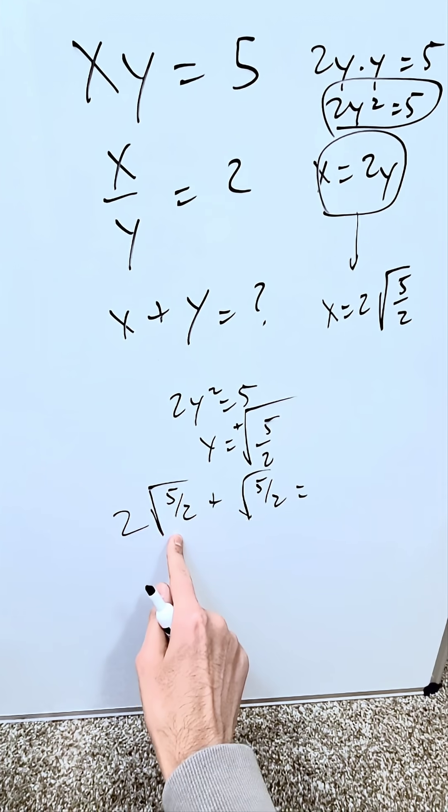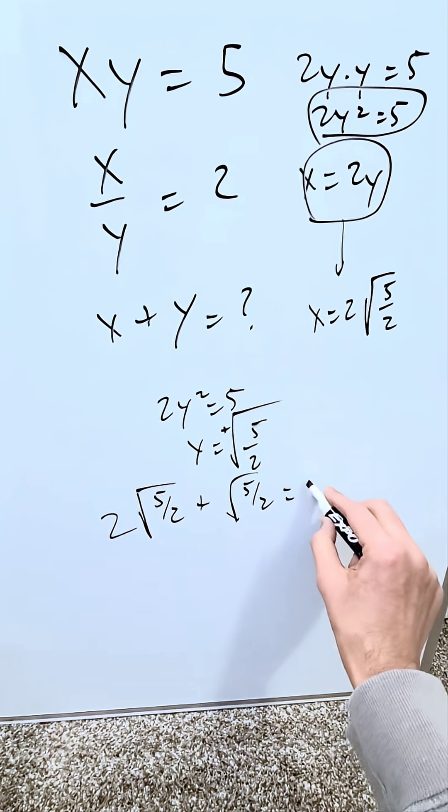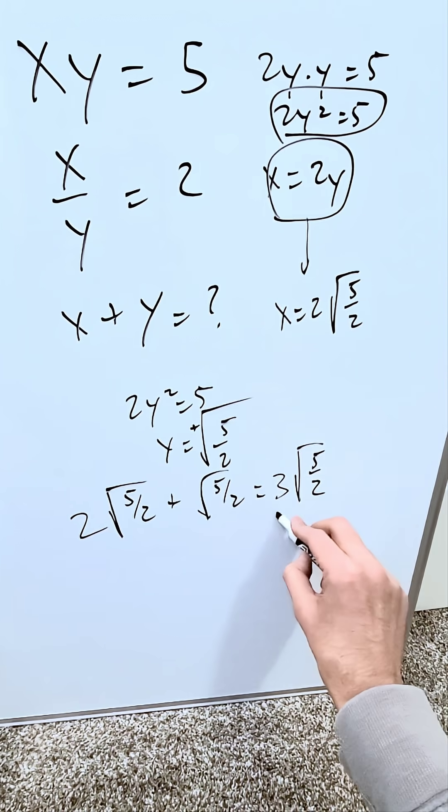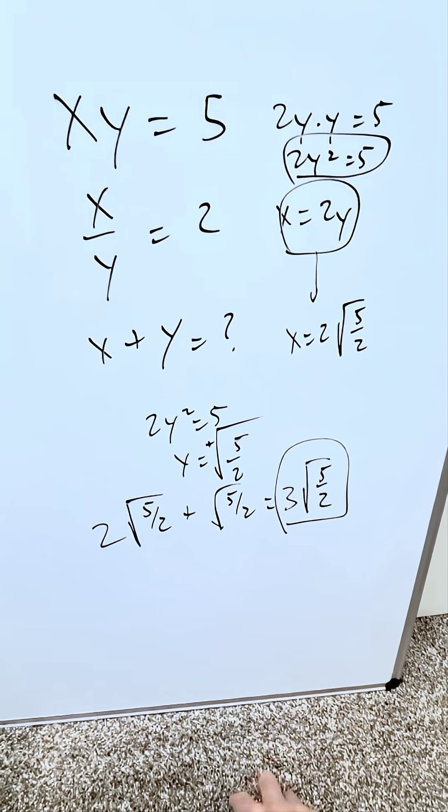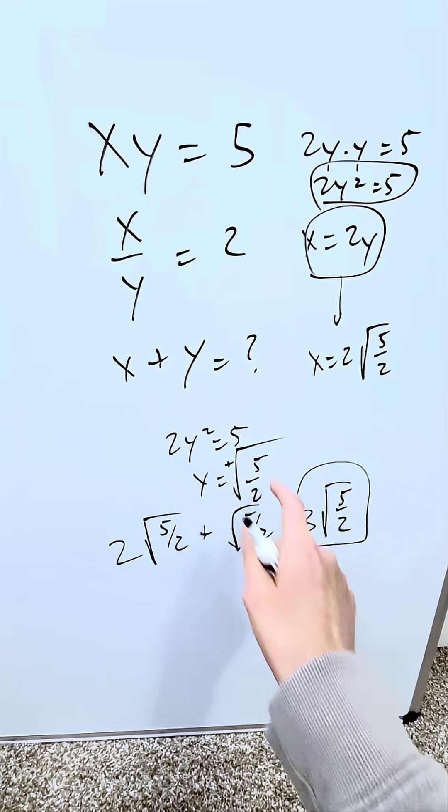I have 2 square root plus 1 square root. So I'll have here 3 square root of 5 over 2. This here is our end result of this system's question, and it will be correct.